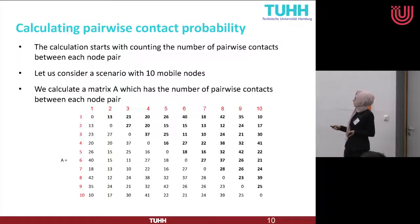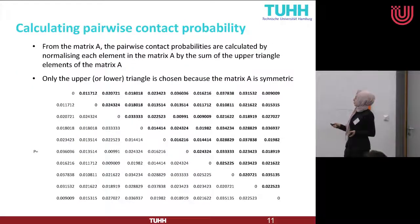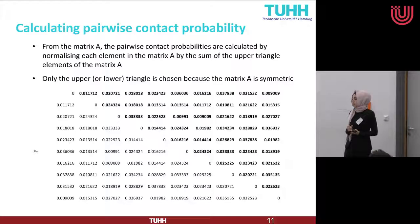This is our contact matrix, where each element represents how many times, for example, node 2 had contact with node 4 during the experiment time. Because the contact matrix is symmetric, summing only the upper triangle gives the total number of contacts. Dividing each element by this total gives the pairwise contact probability. However, we still work with node IDs, which doesn't make sense for the SWIM model. Since SWIM only tracks how many nodes visited a location, we remove node IDs by sorting those probabilities in ascending order.